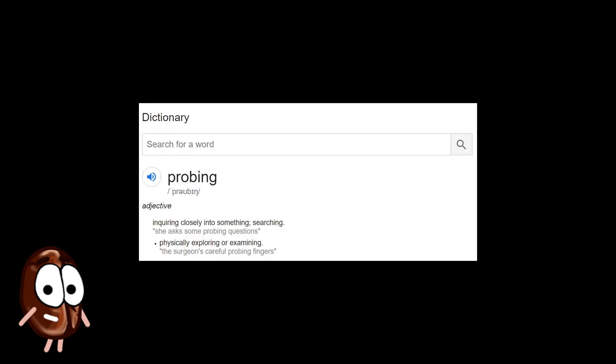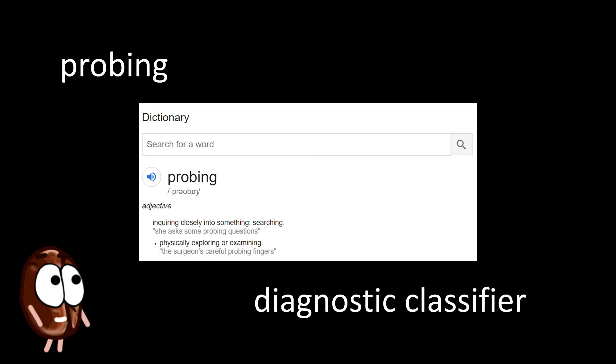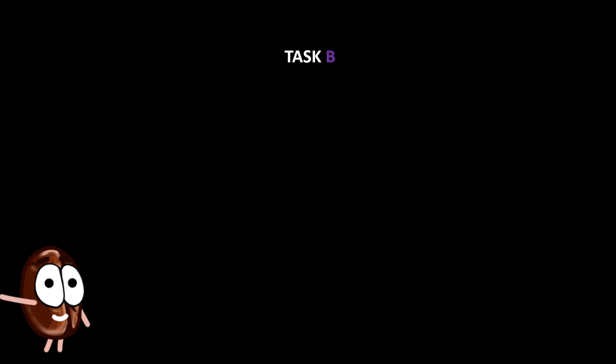Before we can answer this question, we have to choose one phenomenon we want to probe for. Checking if and how much a neural network trained on task A captures a specific linguistic phenomenon is referred to by terms like probing, diagnostic classifier, or probing task B. So, task B comprises the linguistic phenomenon we want to test for here.